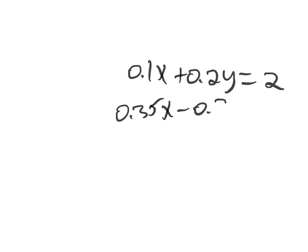Hello, so here we're given this system of equations where we have 0.1x plus 0.2y equals 2, and then we have 0.35x minus 0.3y equals 0.